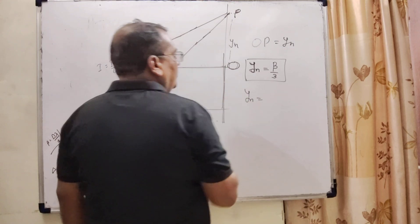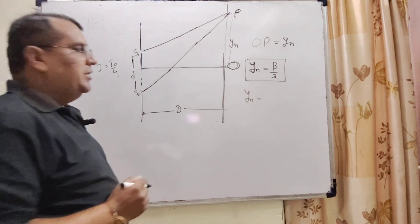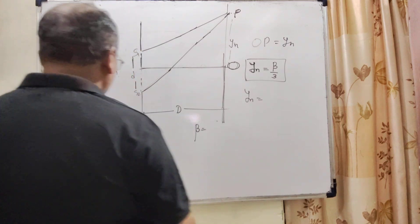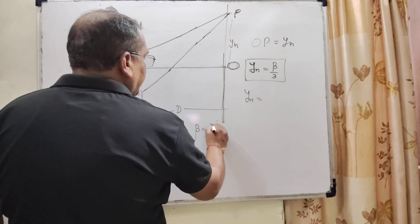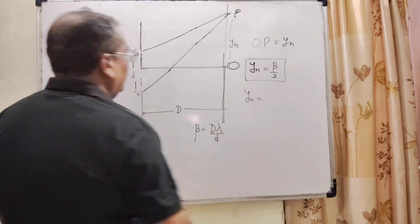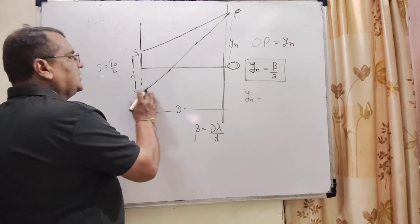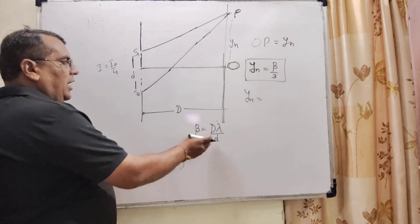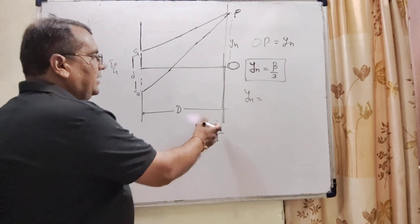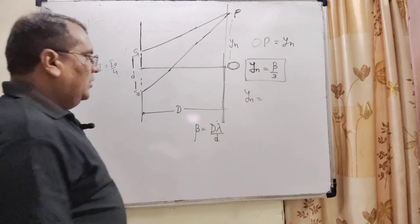So, now what is the formula of fringe width? Here the formula of fringe width beta is equal to capital D lambda upon small d. Here capital D is the distance between the slit and the screen, and small d is the distance between the two slits, and lambda is the wavelength.